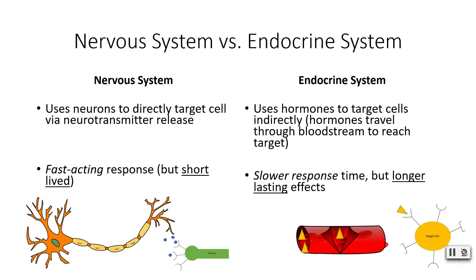First, let's compare the nervous system with the endocrine system. Your nervous system uses neurons to directly target cells via neurotransmitter release, while your endocrine system uses hormones to target cells indirectly, because these hormones travel through the bloodstream and eventually reach their target organ and target cells. Your nervous system is a very fast-acting response but that response is short-lived, while your endocrine system has a slower response time but that response is much longer lasting.